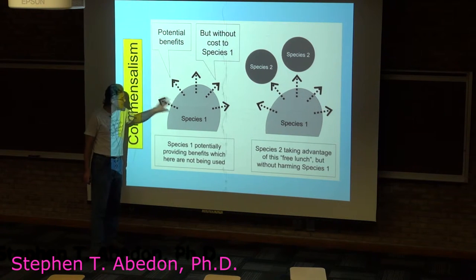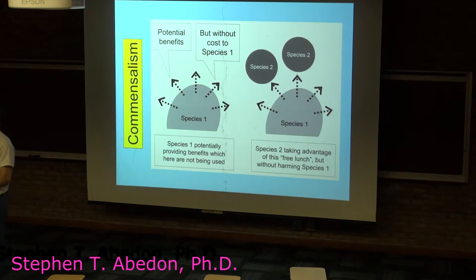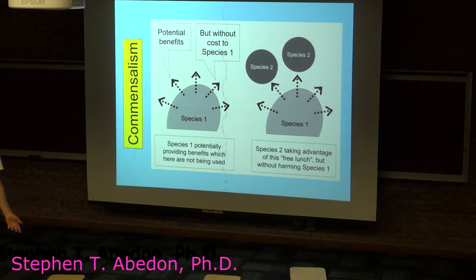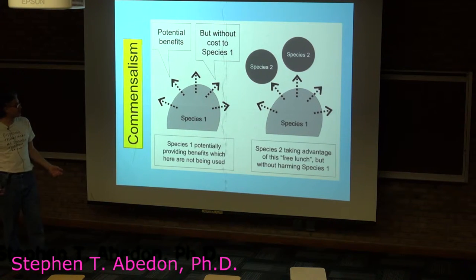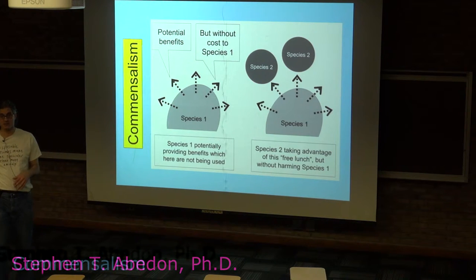An easy way to see this giving off of resources is with defecation. Organisms have to get rid of their wastes—it's just something they've got to do—but it's possible for other organisms to take advantage of those wastes and utilize them.